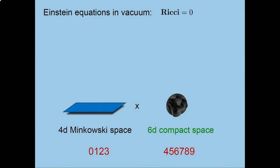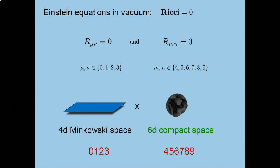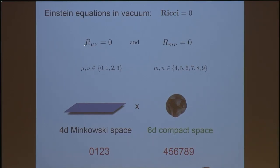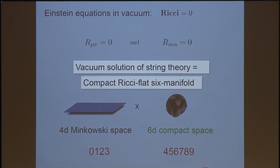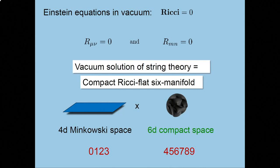Now, a vacuum solution of string theory means a solution in the absence of sources of stress energy. So, no matter, nothing there except the geometry itself. The Einstein equations in vacuum, even in four dimensions, read the Ricci tensor vanishes. So, that's still true in 10 dimensions in string theory. The Einstein equations are equivalent to the vanishing of the Ricci tensor. If I write that out in components, so here are the zero, one, two, three directions tangent to the Minkowski space, and let's let indices M, N run over the six internal directions. Then, the vanishing of the Ricci tensor means that the four-dimensional Ricci tensor and the six-dimensional Ricci tensor have to vanish. Minkowski space is flat. The Ricci tensor already vanishes here. So, all we've got to do is ensure this one. We've got to ensure that the six-dimensional compact space is Ricci flat. So, what this leads us to is the idea that a vacuum solution of string theory corresponds to a compact Ricci flat six manifold. So, much of our work consists of finding manifolds like that.